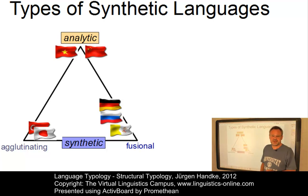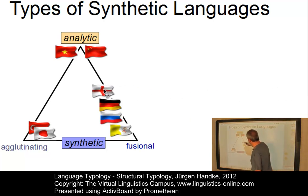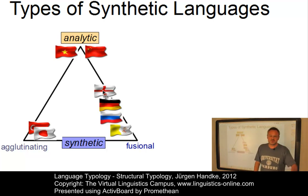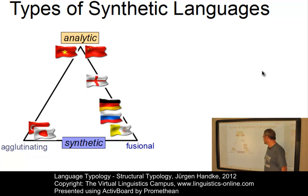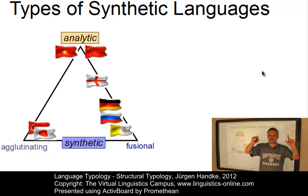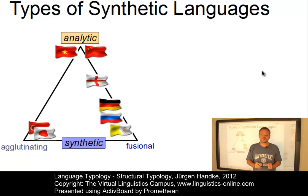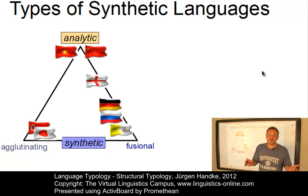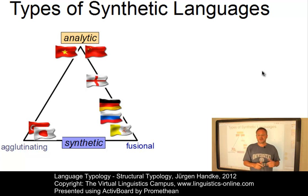What about present-day English? English has traditionally been defined as a synthetic fusional language, but as many of you know from the historical development of English, it is becoming more and more analytic — so it would be legitimate to place English toward the analytic end. Because English now has many analytic words that cannot be subdivided further, such as conjunctions, prepositions, and pronouns. Note that it is often difficult to assign a language to the agglutinating or fusional type, as many synthetic languages have properties of both types.